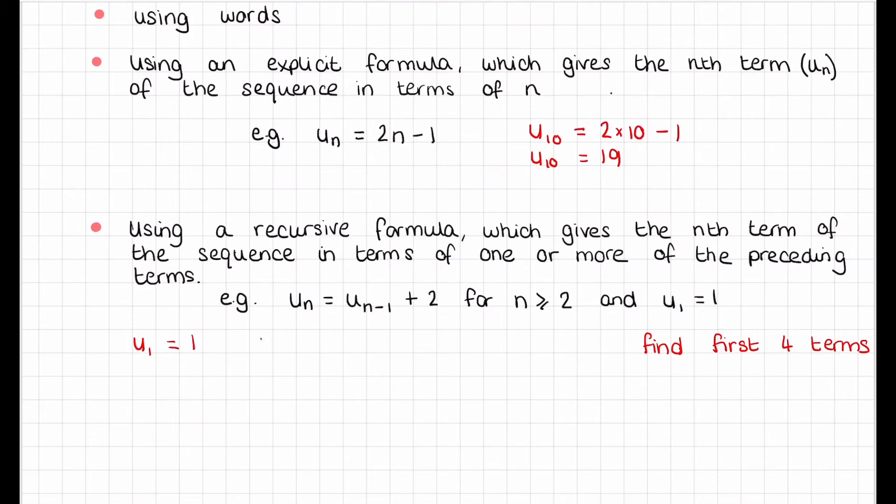So u2 equals u(2-1) + 2, which is u1 + 2. Since u1 = 1, this equals 1 + 2, which equals 3.